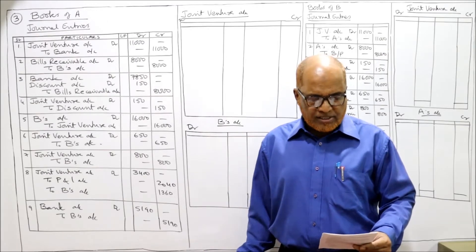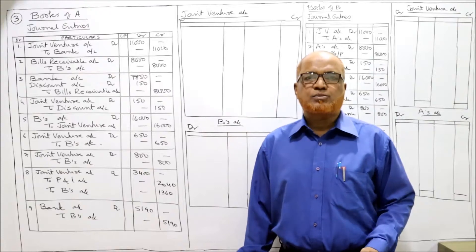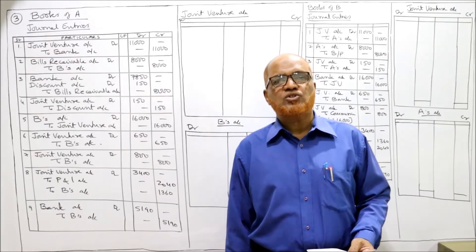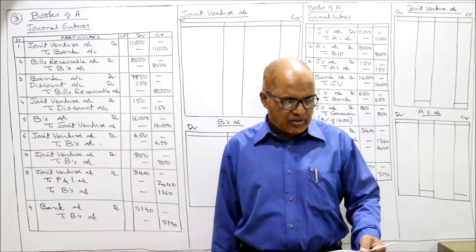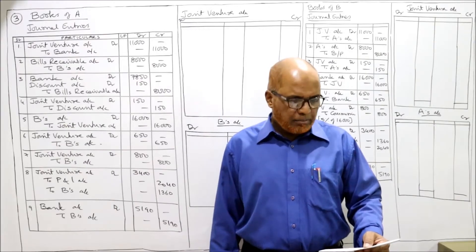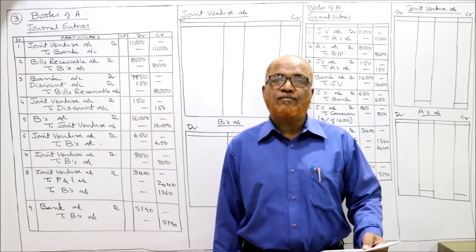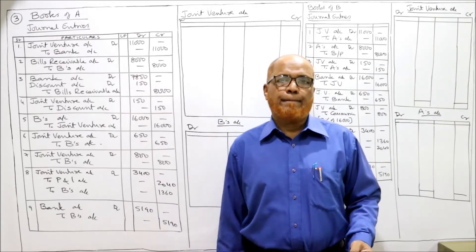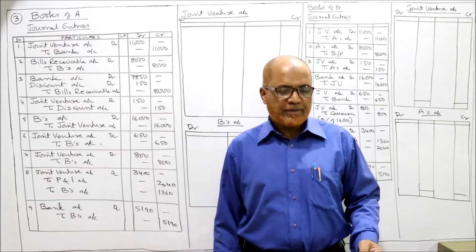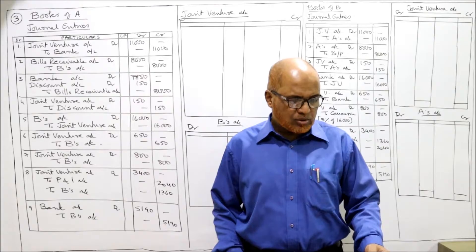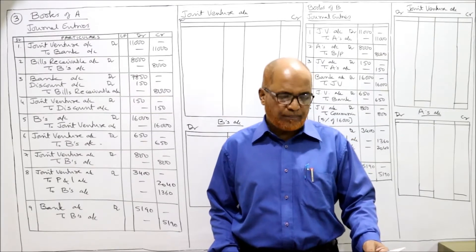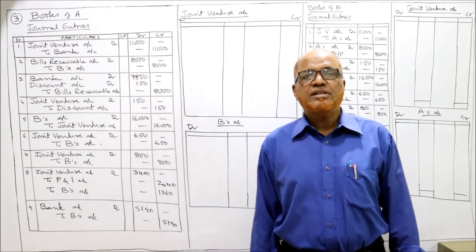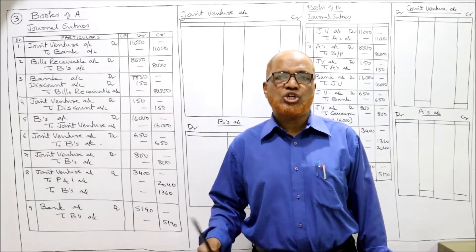A is to purchase timber in Madhya Pradesh and forward it to B in Delhi. A purchased timber worth rupees 10,000 and paid 1,000 as expenses. So the first co-venturer A has purchased timber in Madhya Pradesh for 10,000 and paid expenses of 1,000. B received the consignment and immediately accepted a draft for 10,000. Looking at the problem, investments are made by A whereas sales will be done by B.